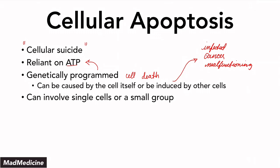Apoptosis can involve a single cell or a small group of cells, but it will never involve a large group, because a large group of cells dying off is cellular necrosis, not apoptosis. Apoptosis can lead to cellular necrosis for sure, but it is defined on a small scale — at a singular cell level or a small group of cells.